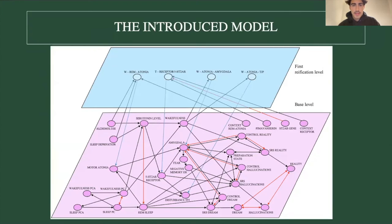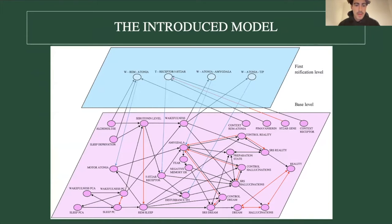In the introduced model, there are in total 33 states. Again, due to the time limit I won't be covering all of them, but I'll highlight the important parts with the neurological background on which the model is based.